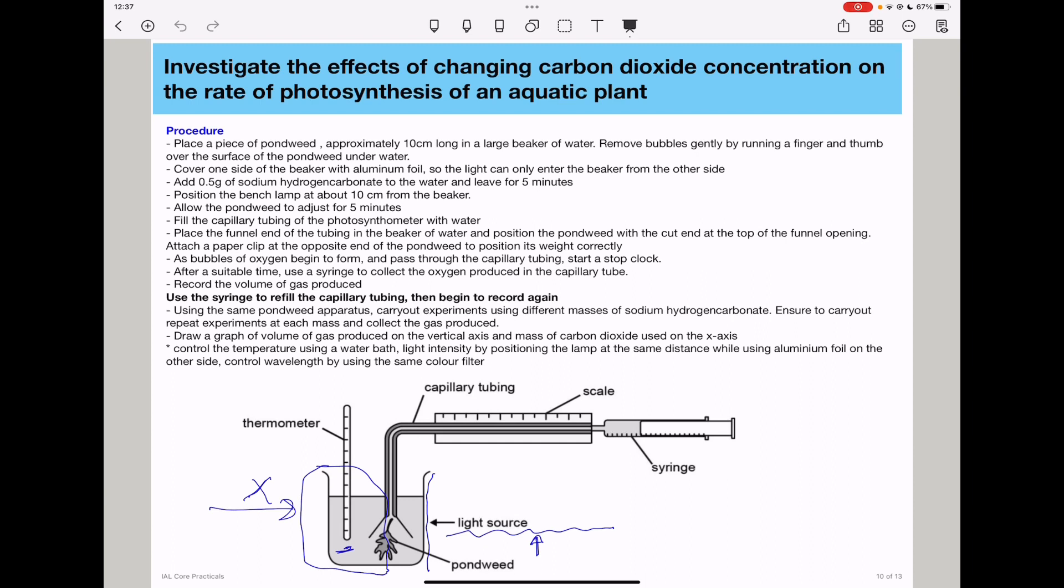As bubbles of gas begin to form and pass through the capillary tubing, start the stopwatch. This ensures the experiment is carried out for the same period of time. After a suitable time, use a syringe to collect the oxygen produced in the capillary tube. Record the volume of gas produced in a table.